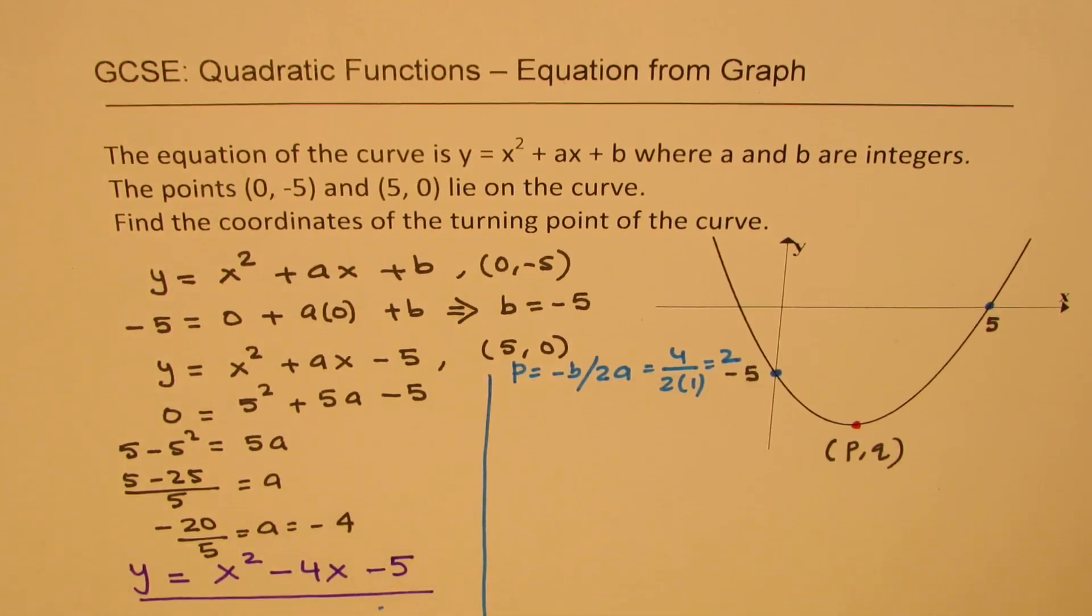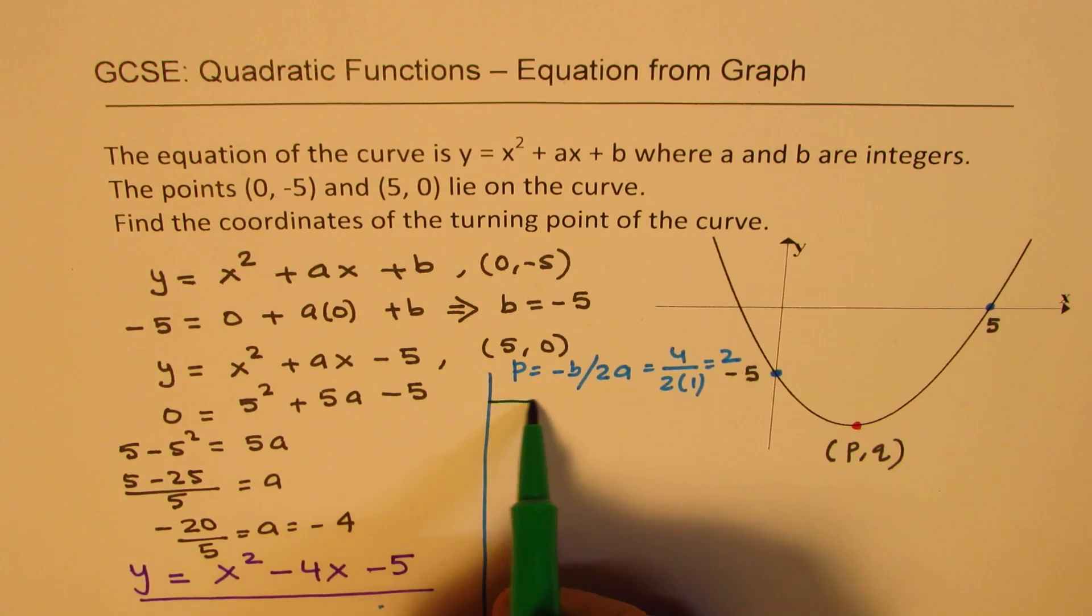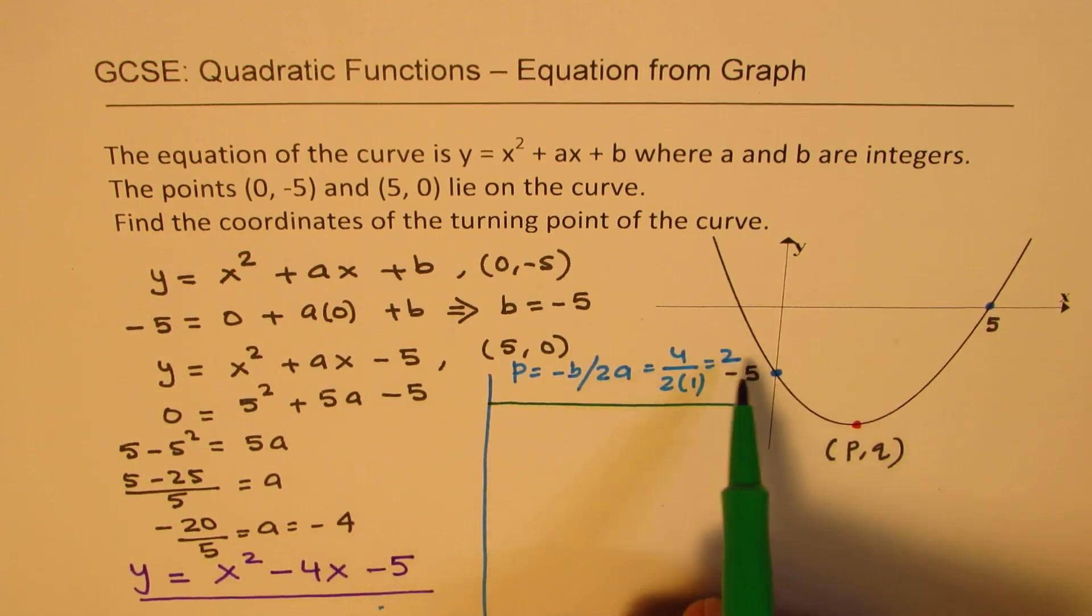But actually, some of you may not know this method, and therefore what I'm going to do here is complete the squares to find the turning point. I could have done it by substituting 2 in the equation to get the value of y also, but I'll actually extend this solution and complete the squares.